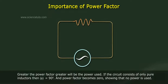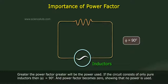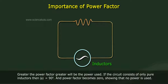Greater the power factor, greater will be the power used. If the circuit consists of only pure inductors, then phi equals 90 degrees and the power factor becomes zero, showing that no power is used.